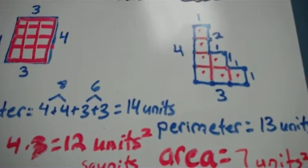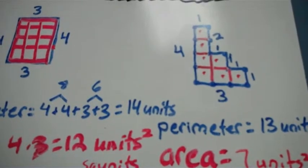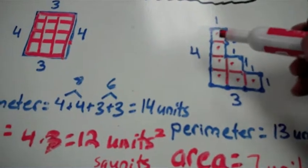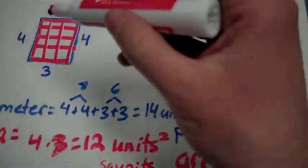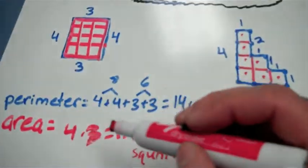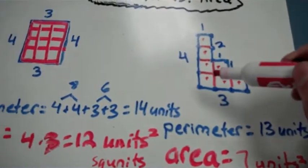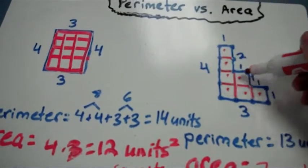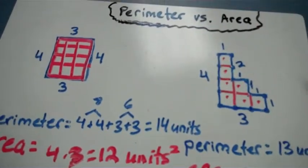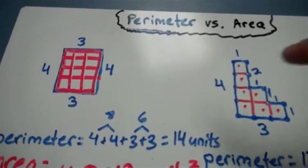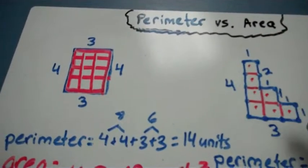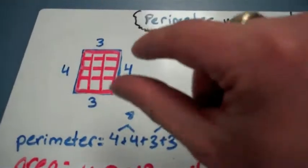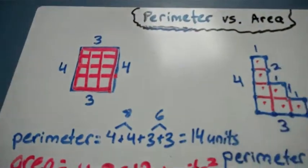I'm going to write it that way because multiplying the way that I did over here, 4 times 3, is not going to be as effective with this one. I think it's going to be much easier just to count the squares. 1, 2, 3, 4, 5, 6, 7 square units. So again, perimeter: distance or length around a shape. Area: space within the shape.